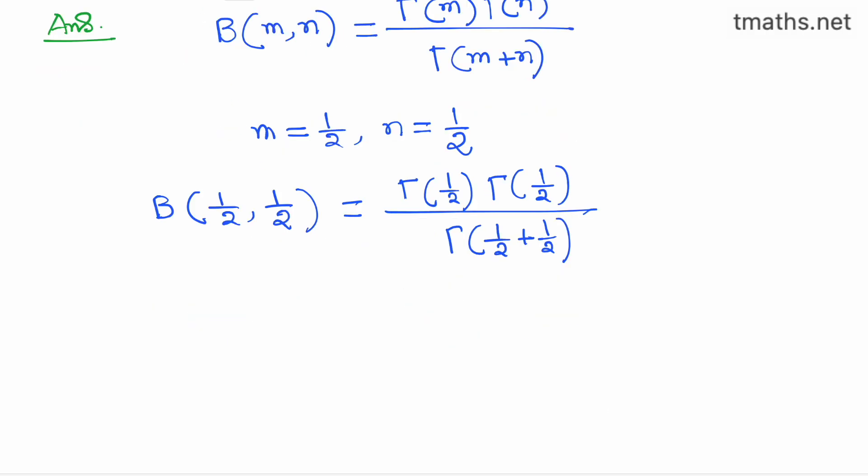Now, let us recall the beta function B(m,n) is equal to integration from 0 to 1, x to the power m minus 1, times 1 minus x to the power n minus 1, dx,